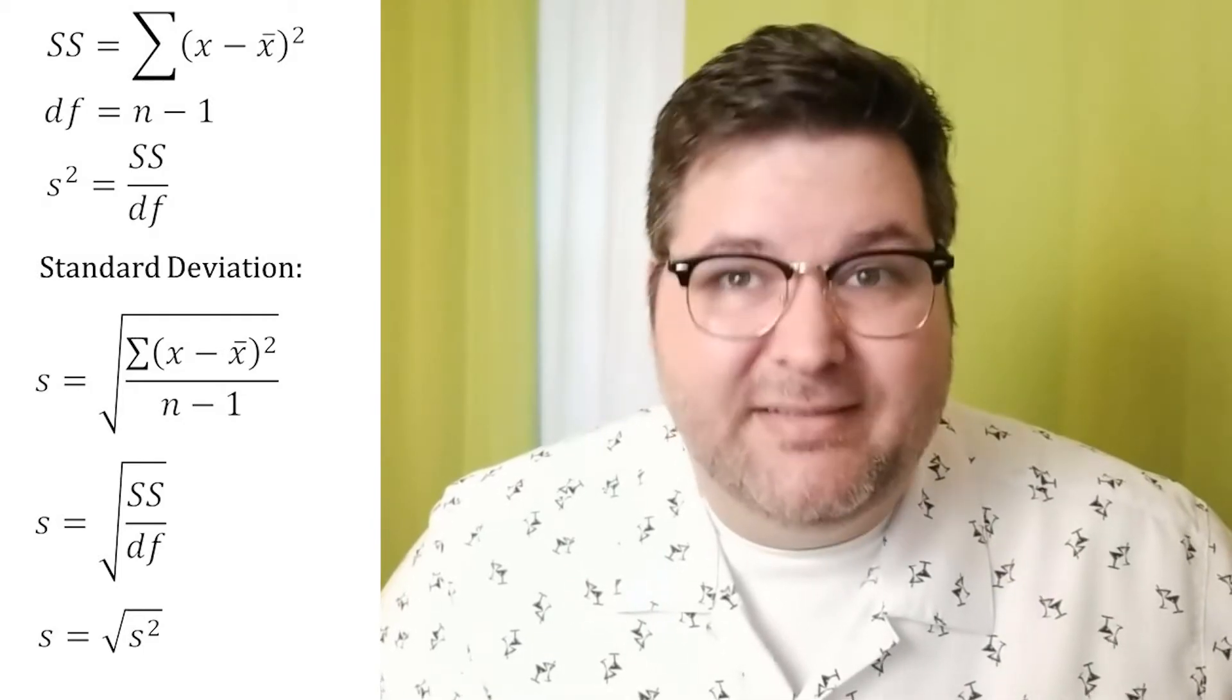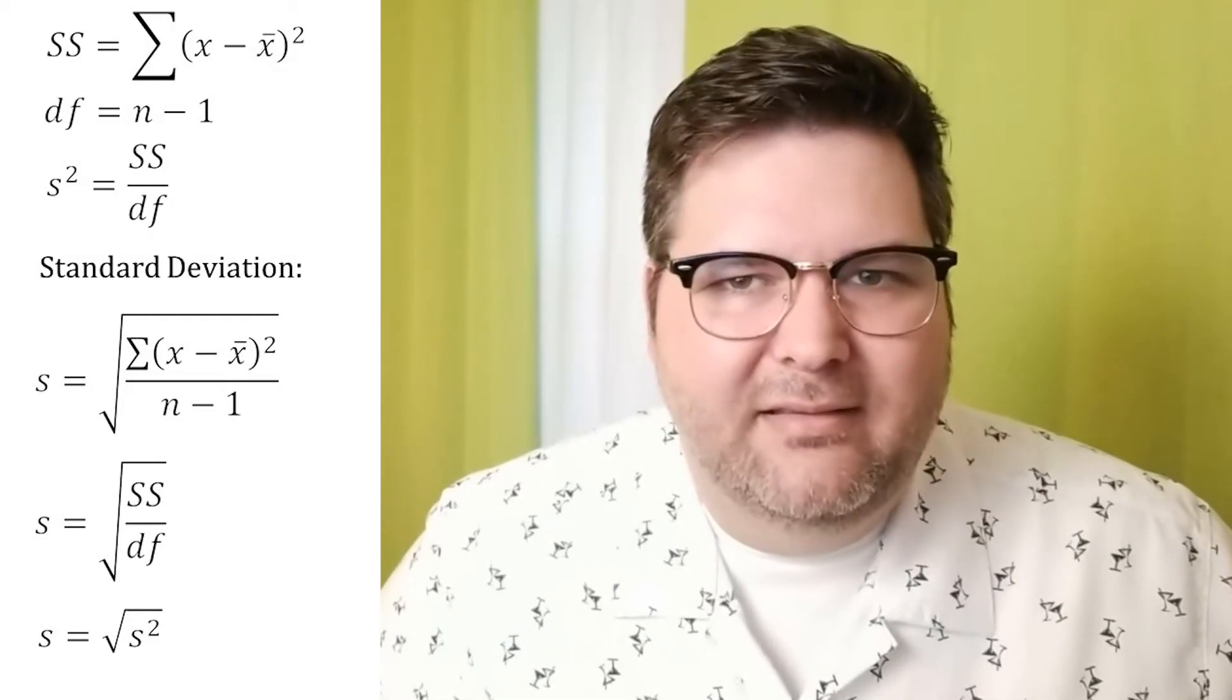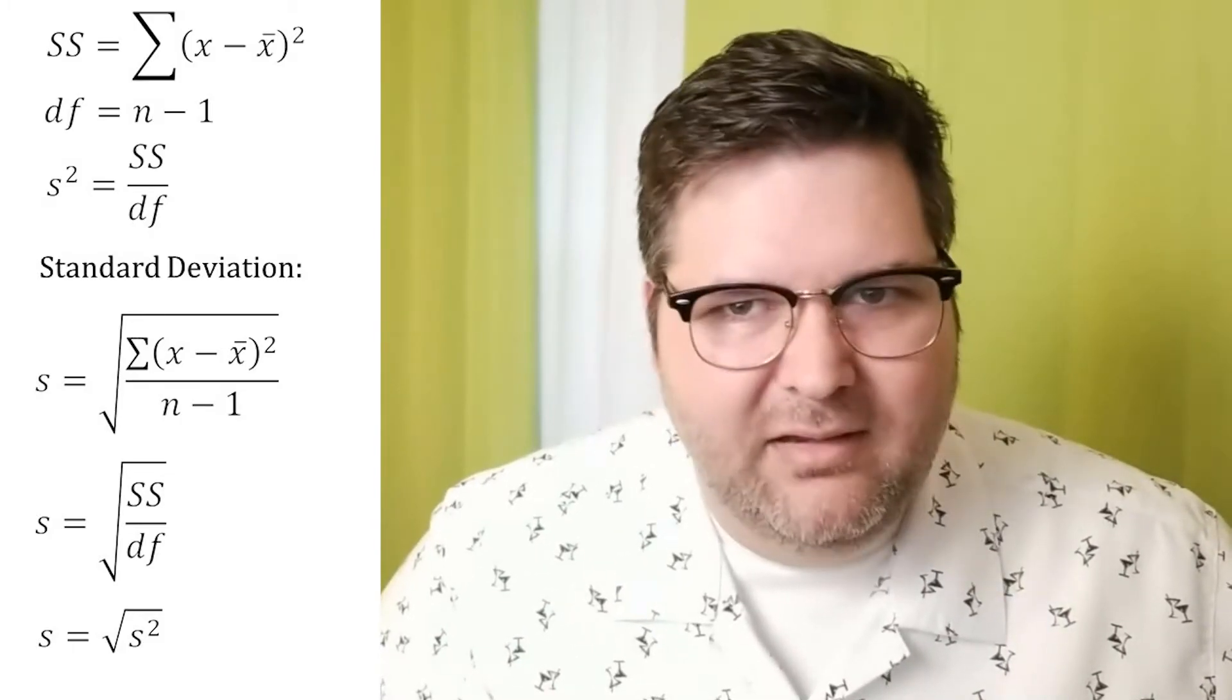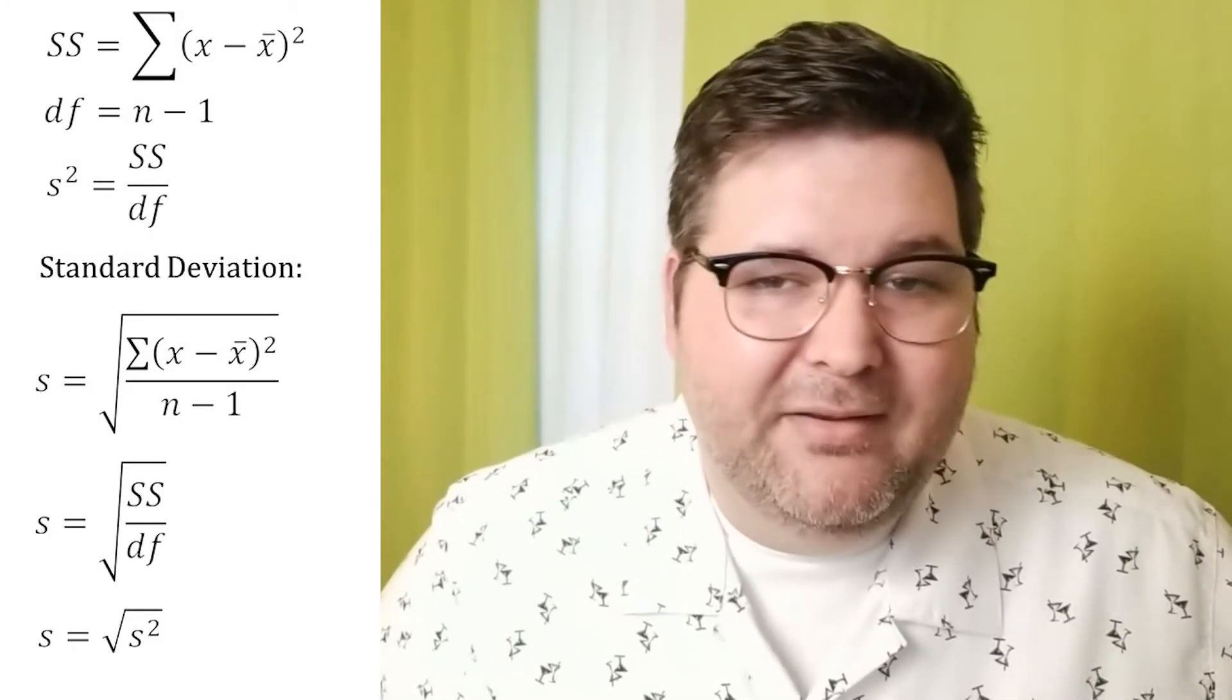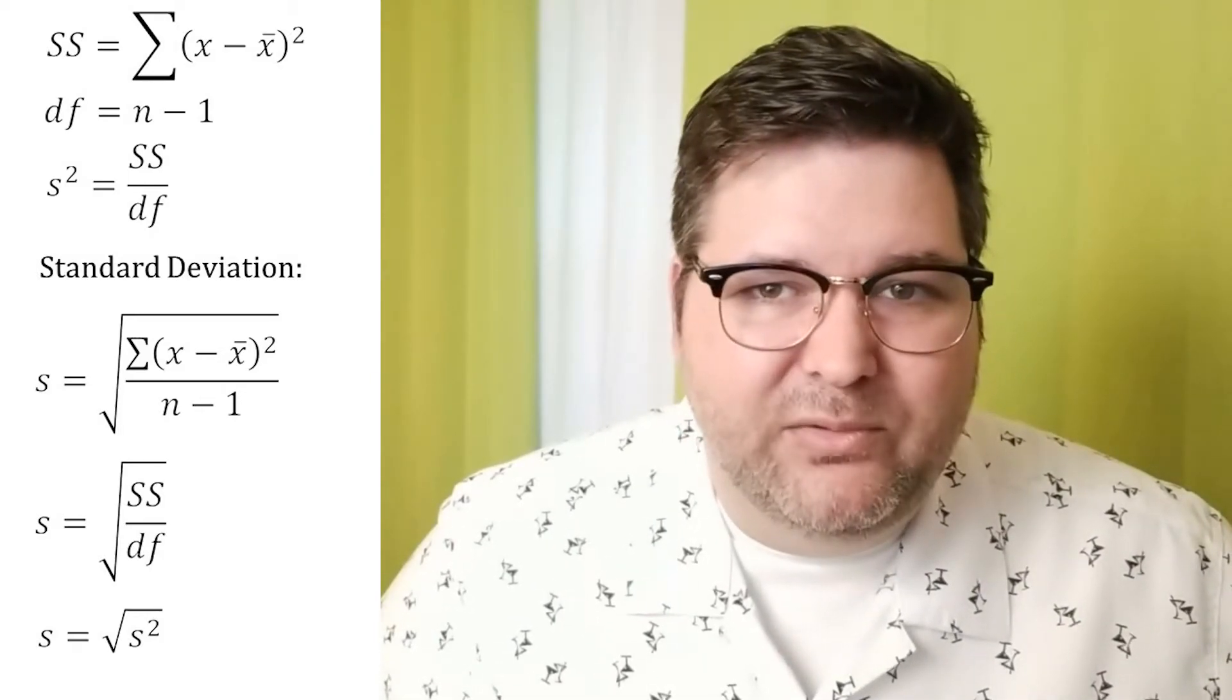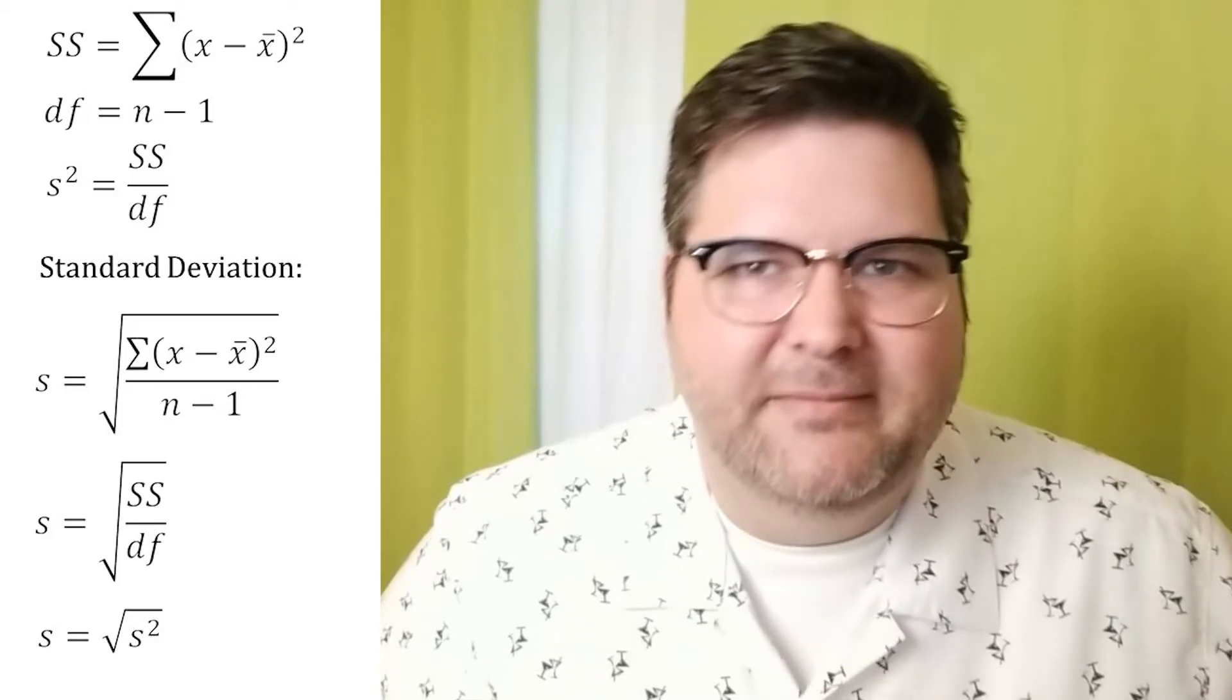The standard deviation is equal to the square root of the sum of squares divided by the degrees of freedom. Or if you want to get even more simple, then you can say the standard deviation is equal to the square root of the variance. The point is we can take all these equivalent statements and mix and match and swap them in and out. That way you can write the same formula a whole bunch of different ways. This really confuses people, and it'll help make sure that you've got the market cornered.